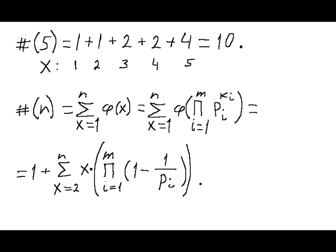The total number of beautiful labelings for n equals 5 is the total of numbers calculated for each value of x. The total is 10. In general, for any natural number n, the total number of beautiful labelings equals the sum of values of Euler's function for each x from 1 to n. The value of Euler's function of 1 is, by definition, equal to 1, and the values of Euler's function for all other numbers x from 2 to n follow the well-known formula. This completes this lesson.